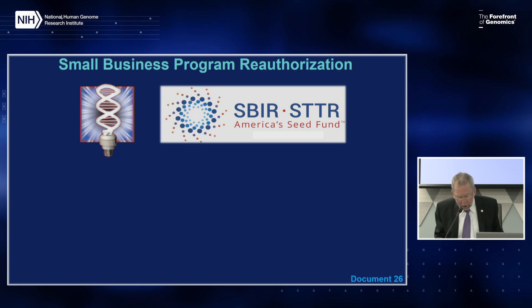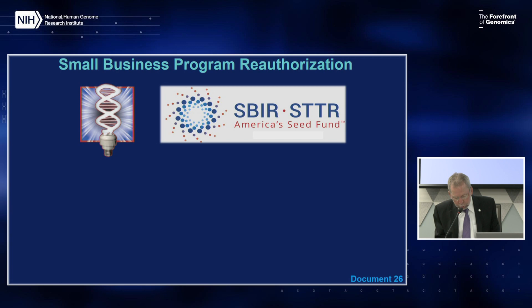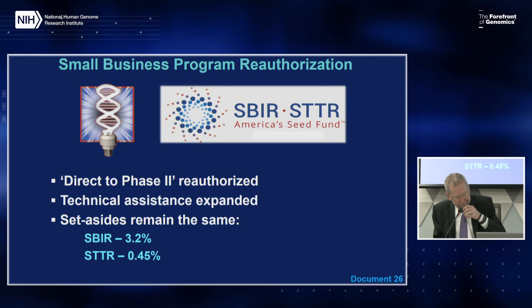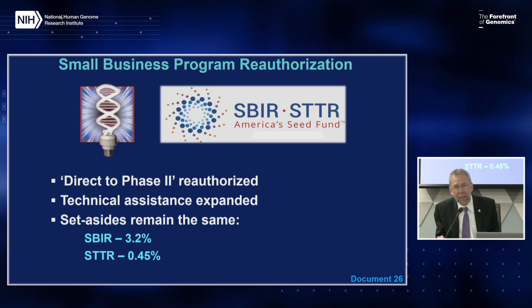In August, the President signed the John S. McCain National Defense Authorization Act, which through reauthorization addressed key aspects of the small business program. NIH will implement these changes in fiscal year 2019. Provisions of notable interest to NHGRI grantees include: the successful direct-to-phase-two grants option was reauthorized, allowing phase-two applications without a prior phase-one grant; technical assistance for small businesses will be expanded; and congressionally mandated set-asides remain at 3.2% of the extramural research budget for SBIR grants and 0.45% for STTR grants. In fiscal year 2018, NHGRI invested $15 million in small business genomics commercialization efforts, part of NIH's $1 billion small business investment.